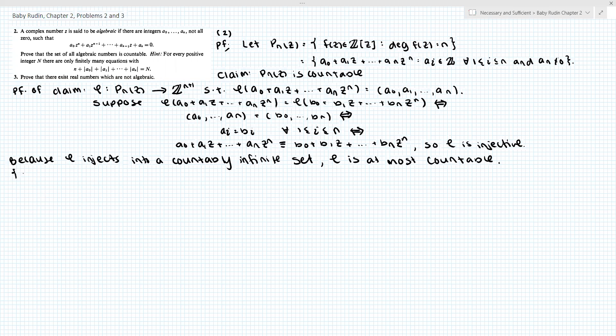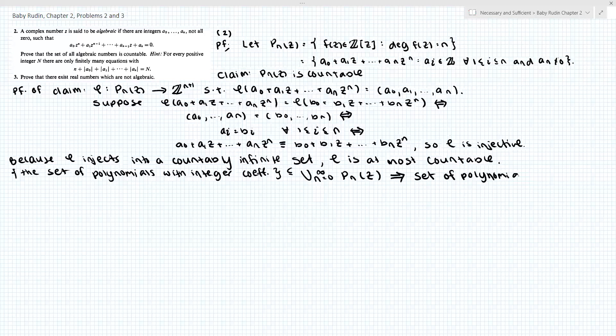So now we can write the set of polynomials with integer coefficients is a subset of the countable union from n equals 0 to infinity of P sub n of z. So this implies that the set of polynomials with integer coefficients is countable.